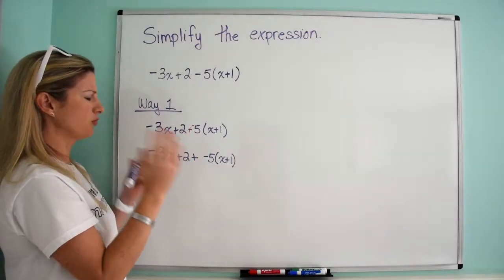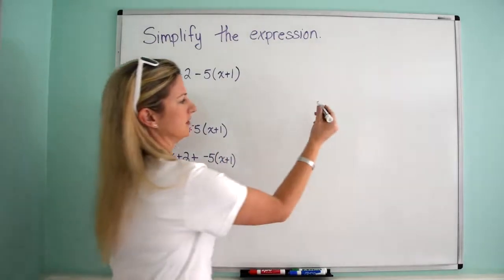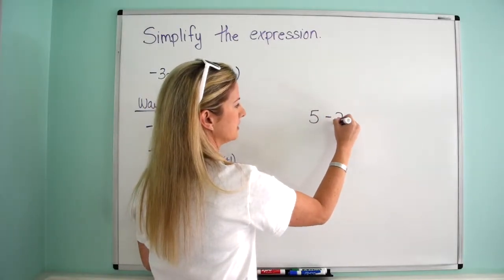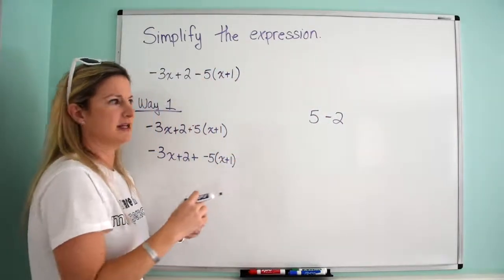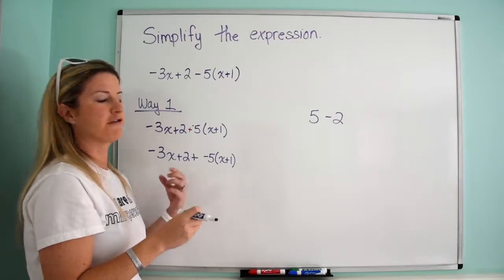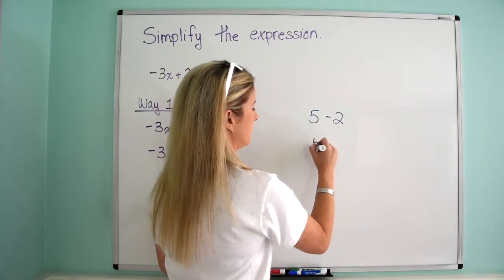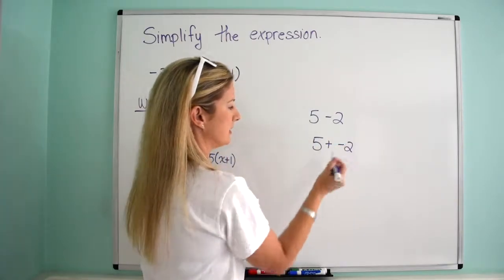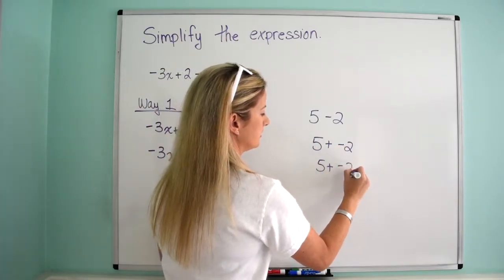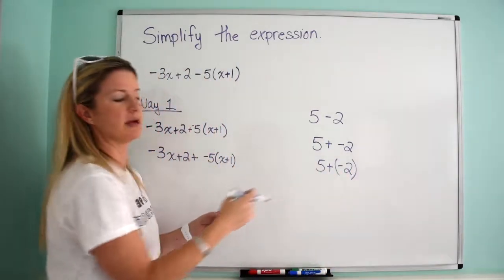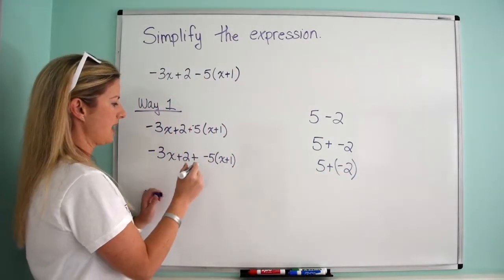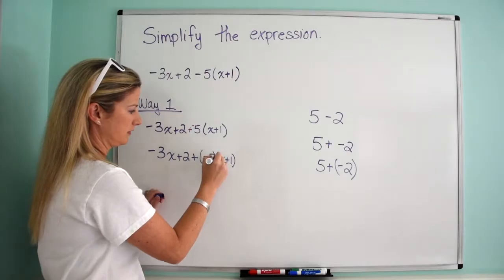So the reason you're allowed to do that is if you think of something like this. If I had 5 minus 2, the subtraction sign is actually our shorthand for adding the additive inverse. So 5 minus 2 is the same as 5 plus negative 2, right? And some teachers will want to actually put it in parentheses so you can see. So actually, maybe I should even put parentheses here.